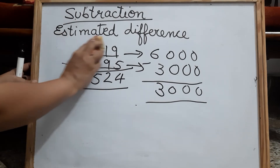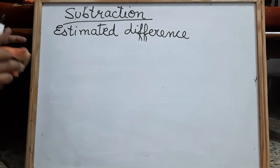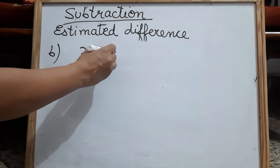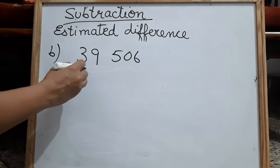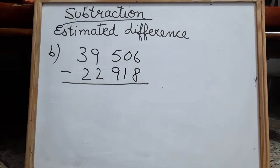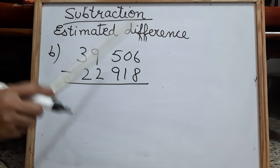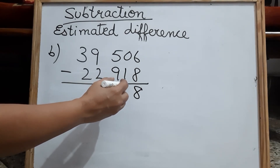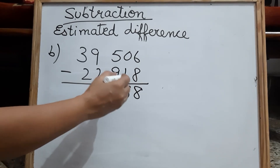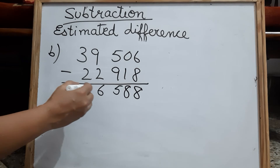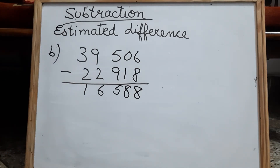One more example of the 10,000 place I will take. This was 1000. So let us take 39,506 minus 22,918. We are going to find the actual difference. You also do this in your rough note, children. So the actual difference is 16,588.